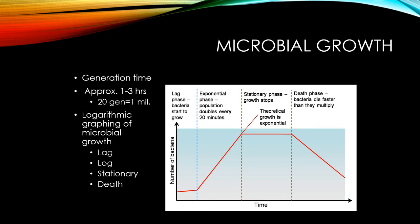In the stationary phase, the growth rate slows — the number of deaths becomes equal to the number of new cells produced, creating an equilibrium. Nutrients are being depleted and pH is changing because of the toxins and waste products being produced. Then in the death phase, deaths begin exceeding the number of new cells formed, continuing until the population dies out completely or just a few cells remain. This is why it's so important to finish all antibiotics — leaving some bacteria alive allows them to proliferate again. Some bacteria form spores that can live on indefinitely until conditions become ideal.